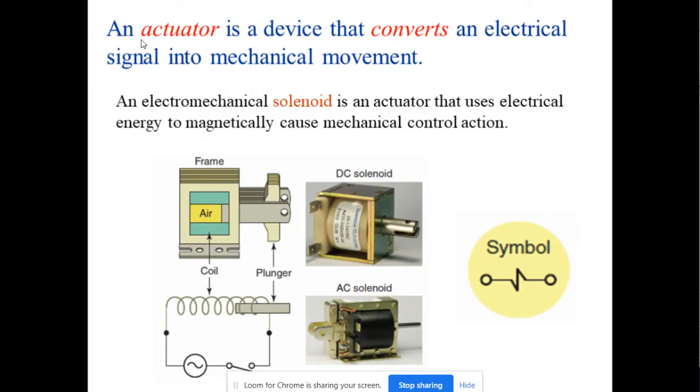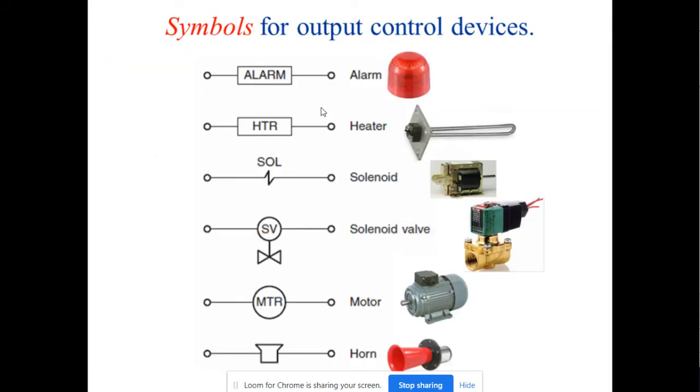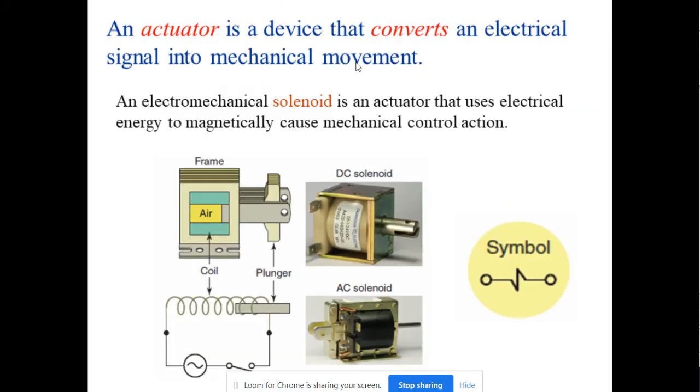This actuator is basically a device that converts an electrical signal into mechanical movement like motors. The electromechanical solenoid is an actuator that uses electrical energy to magnetically cause mechanical control action. This is the symbol for actuator for the solenoid.